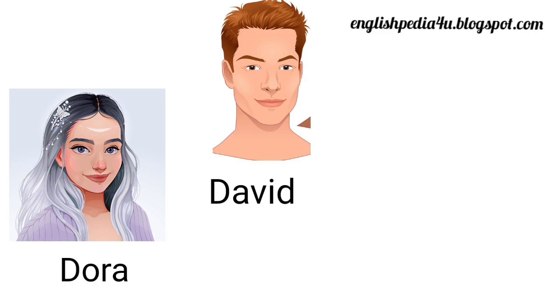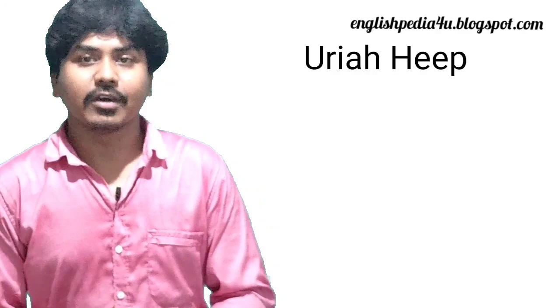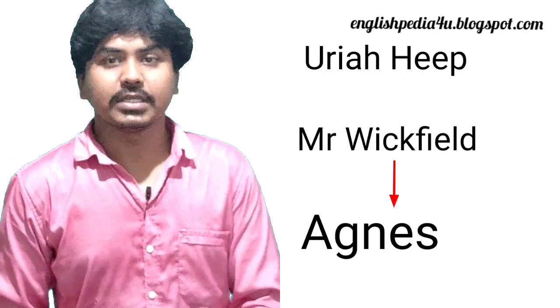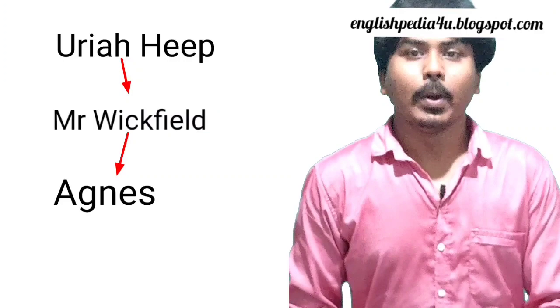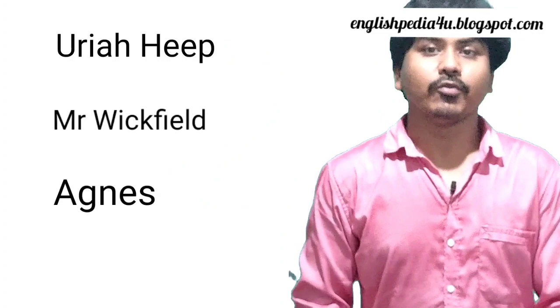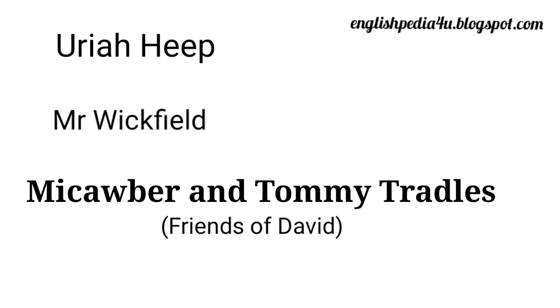On the other hand, Uriah Heep, who was Mr. Wickfield's servant, makes Wickfield an alcoholic. His daughter Agnes becomes upset and sad over her father's bad condition. Heep also wants to marry Agnes. This Heep was a fraud who forged Mr. Wickfield's signature to defraud the Bank of England. But he is exposed by Micawber and Tommy Traddles, who were David's friends, having gathered evidence that Uriah Heep committed multiple acts of fraud.